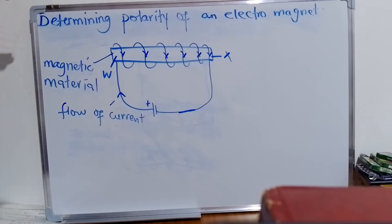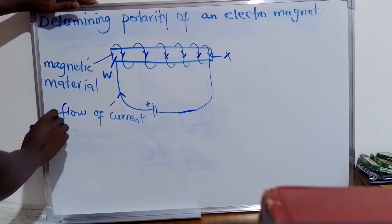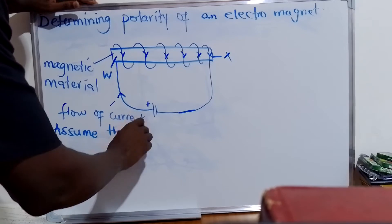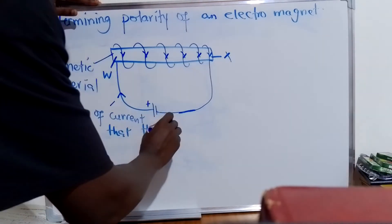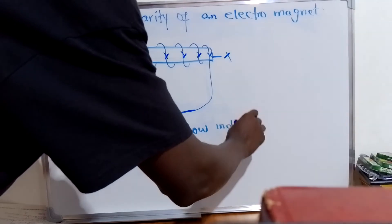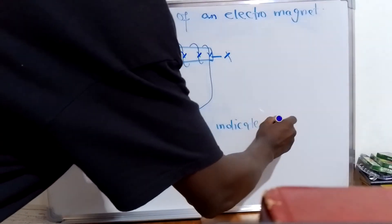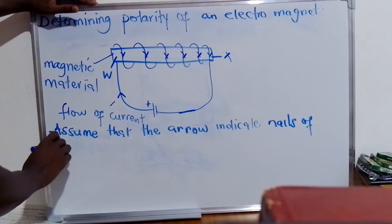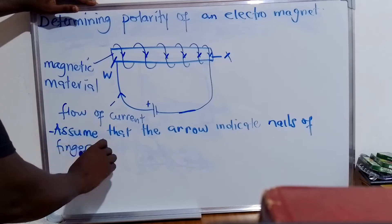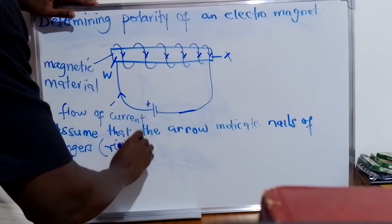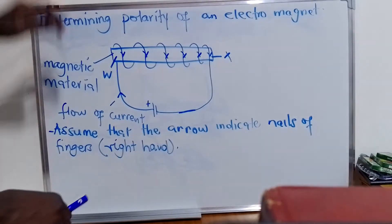Let's assume that the arrows indicate the nails of our fingers. This must be the right hand — the right-hand rule.